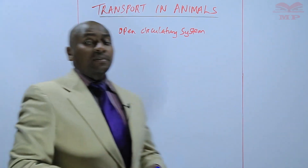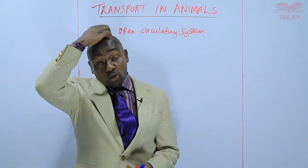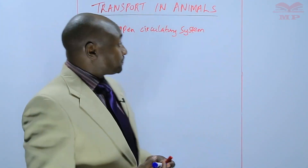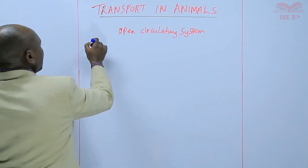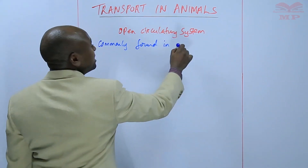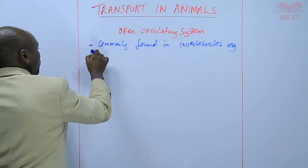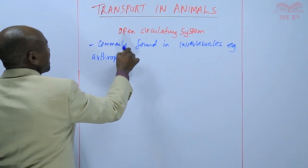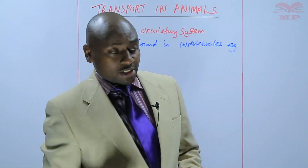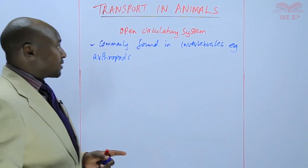During the last lesson, we discussed that there are two types of circulatory system. The first one is open circulatory system, and we have closed circulatory system. Open circulatory system is commonly found in invertebrates, for example arthropods. Arthropods are things like insects, arachnids, and crustaceans — all members of the phylum Arthropoda. So these ones have an open circulatory system.